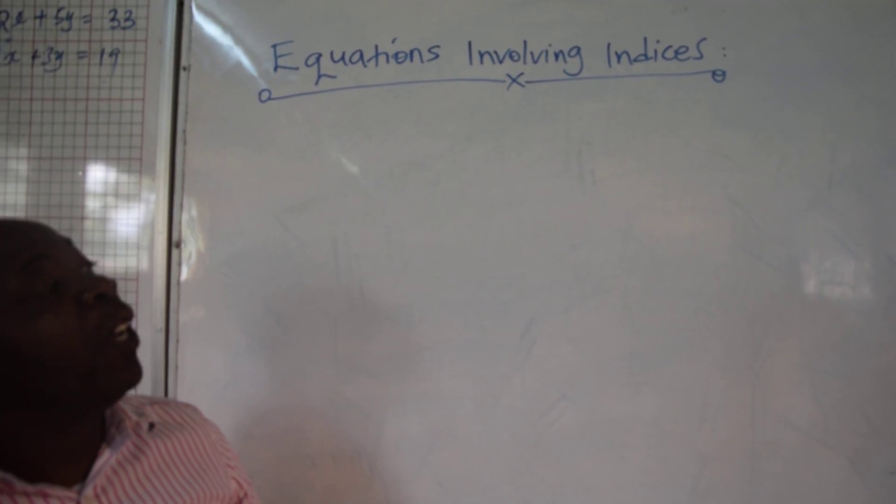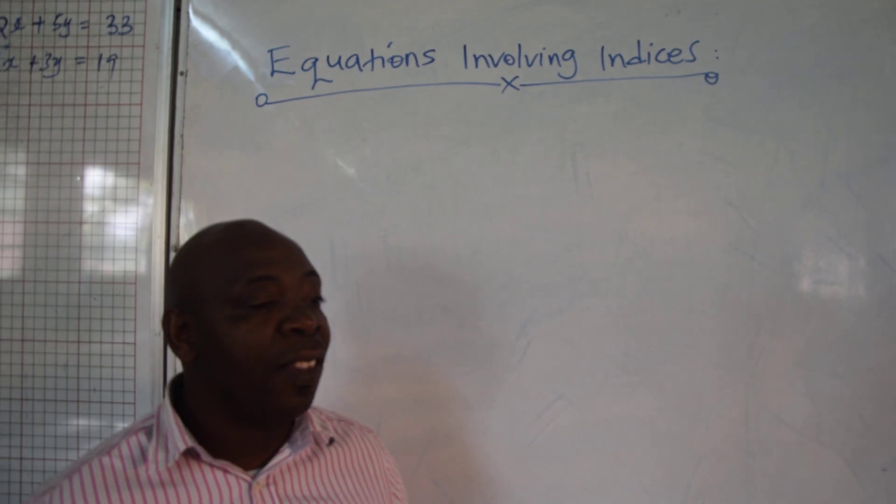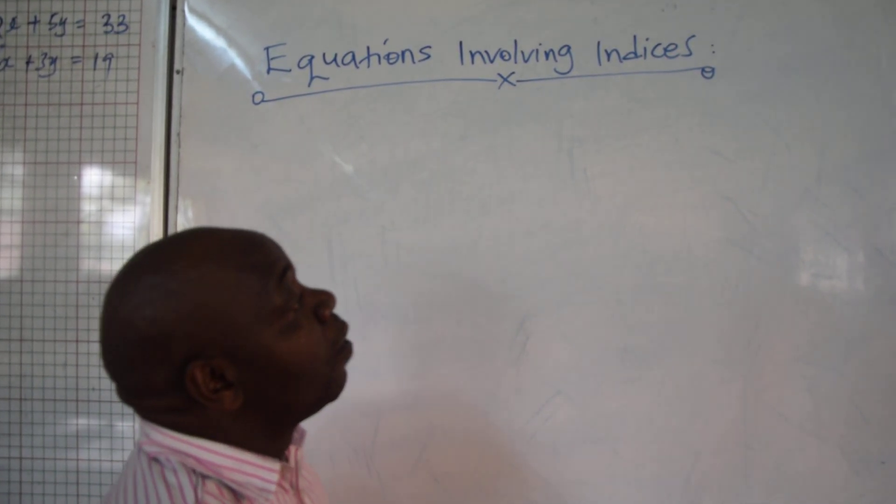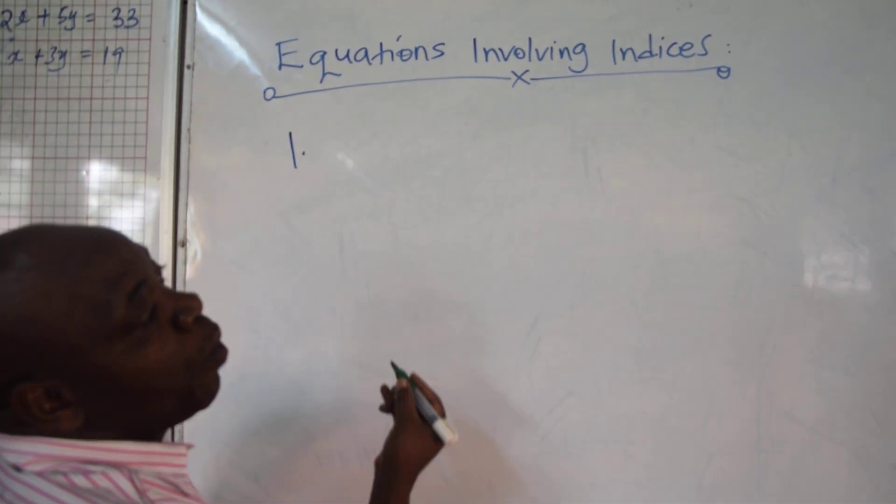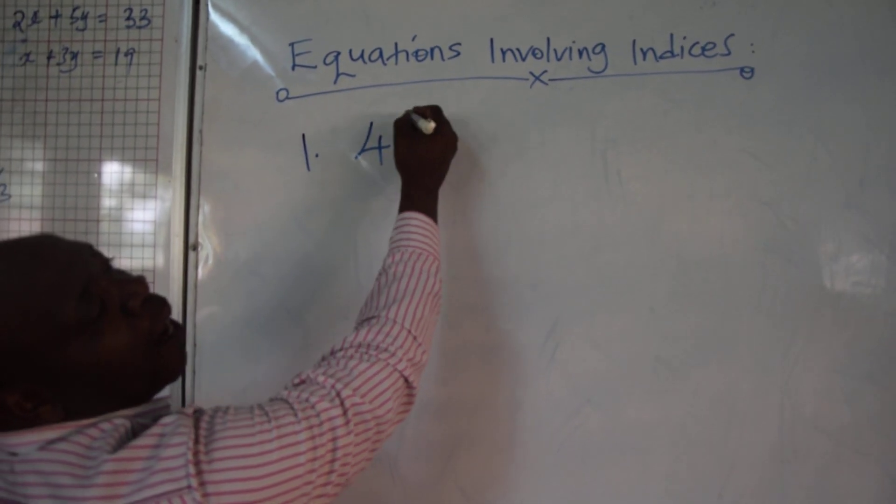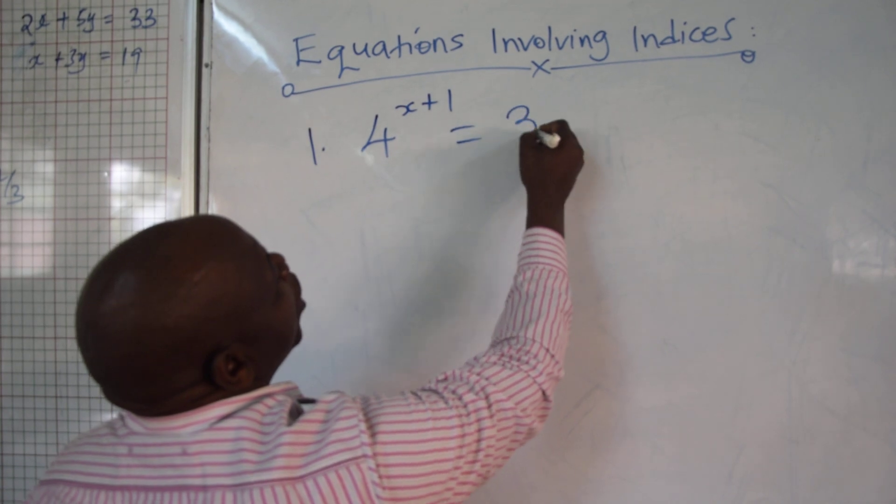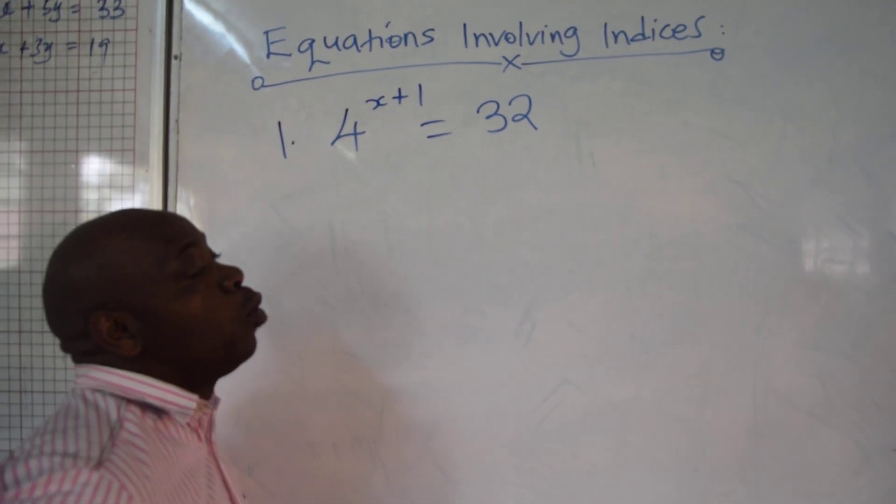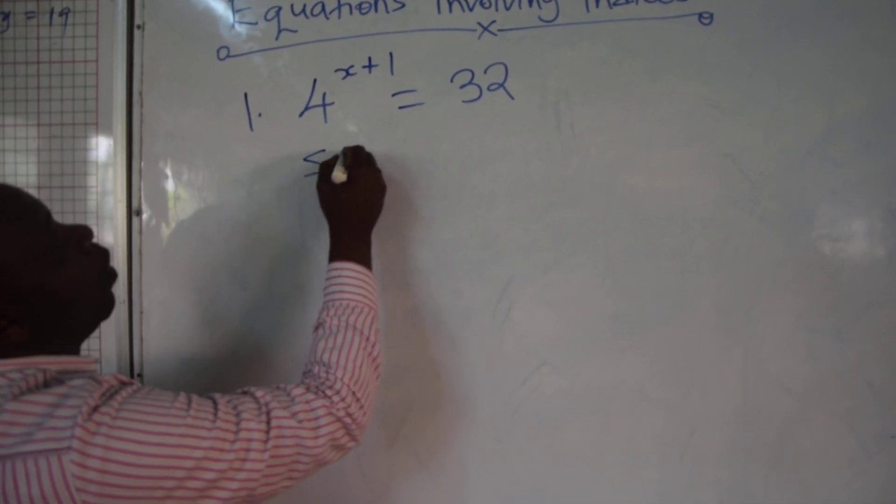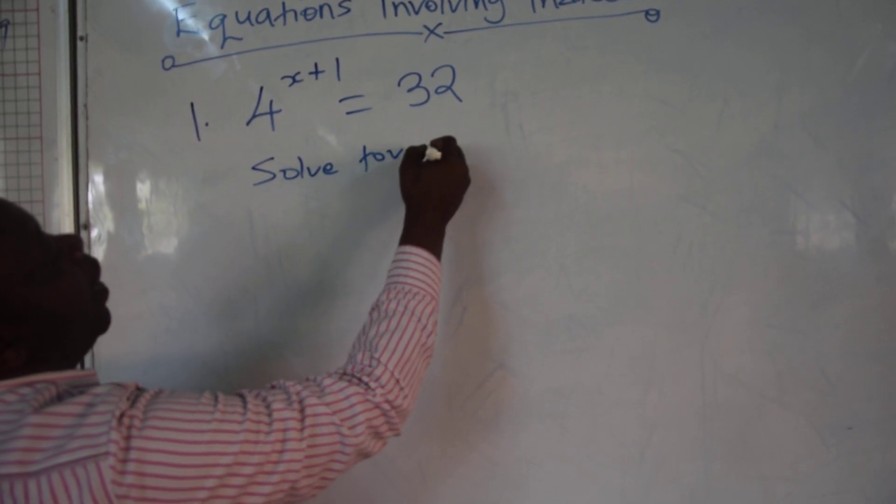And we are going to do some few examples from the past KCSE papers. Number 1, for example, if you are given 4 power x plus 1 equals to 32, then you are told to solve for x.